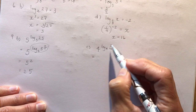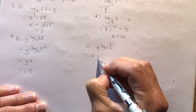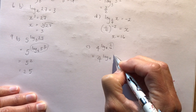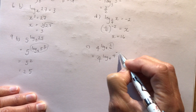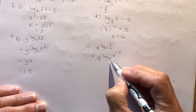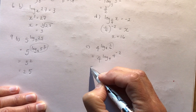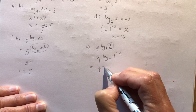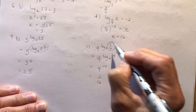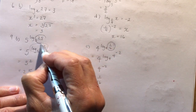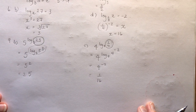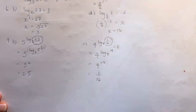4 to the power of log base 4 of 1/16: write 1/16 with a base of 4 — 1/16 is 4 to the negative 2. So log base 4 of 4 to the negative 2 equals negative 2, and 4 to the negative 2 is 1/16. This confirms the answer right away — save your time by using these rules.